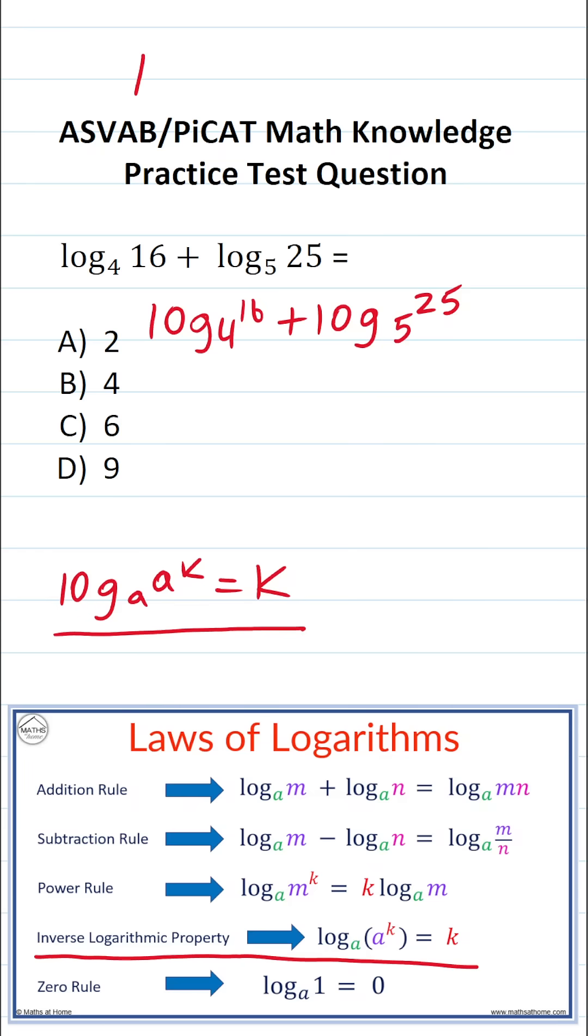And what is 16? Well, 16 is the same thing as 4 squared. And what is 25? 25 is the same thing as 5 squared. So let's go ahead and rewrite these accordingly. This becomes log base 4 of 4 squared plus log base 5 of 5 squared.